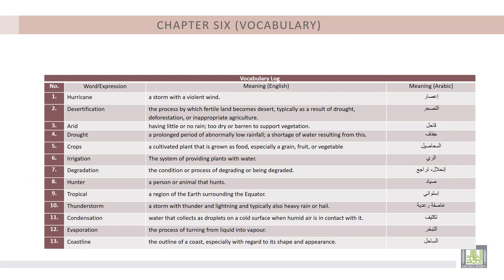The vocabulary log of this chapter includes the following. 1. Hurricane. 2. Desertification. 3. Arid. 4. Drought. 5. Crops. 6. Irrigation.